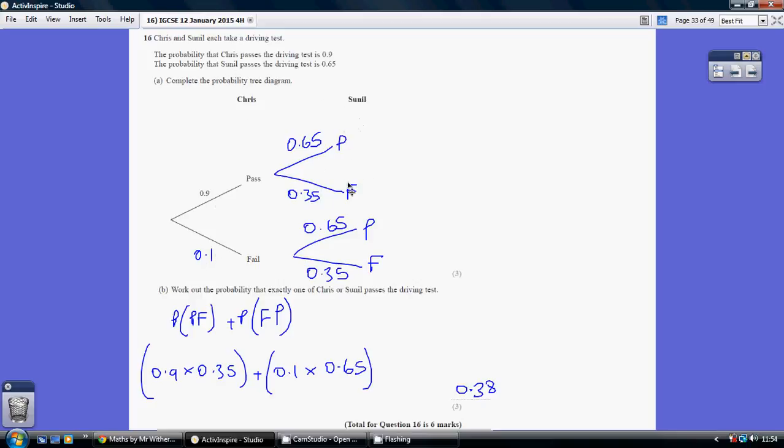Moving on to Sunhill, he can also pass or fail. Passing is 0.65, so again, failing is the balance, 0.35. We repeat these options for Sunhill down here as well, so that gives